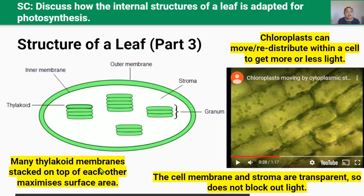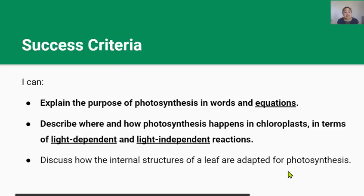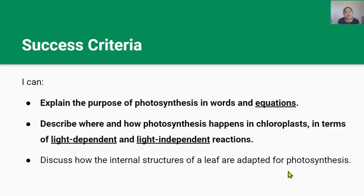This combination of leaf cell structures and the structure of chloroplasts helps plants maximize their rate of photosynthesis. Well done — you've reached the end of the video. By now you should be able to explain the purpose of photosynthesis in words and equations, describe where and how photosynthesis happens in chloroplasts in terms of light-dependent and light-independent reactions, and discuss how the internal structures of a leaf are adapted for photosynthesis. Thanks for watching, and I'll see you in the next video.